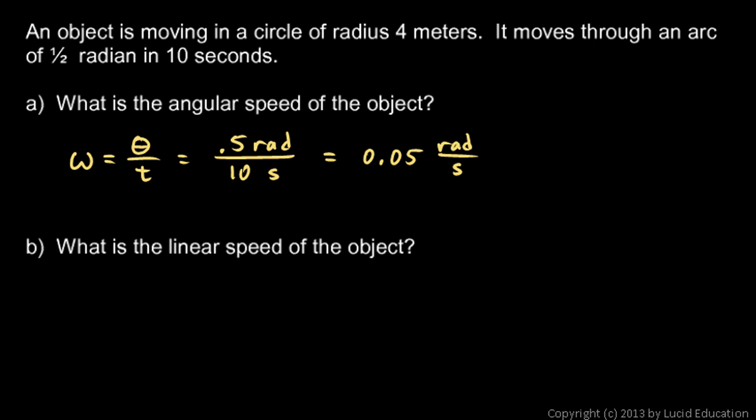And then we're asked, what is the linear speed of the object? I'm going to solve this two different ways. Watch this. First, just think what you know about speed. Speed is distance over time, and we know the distance. Remember this equation? Distance is r θ, and s is commonly used for distance.